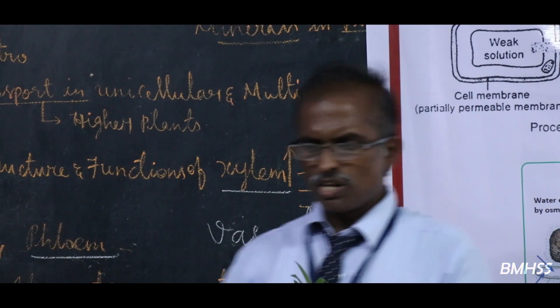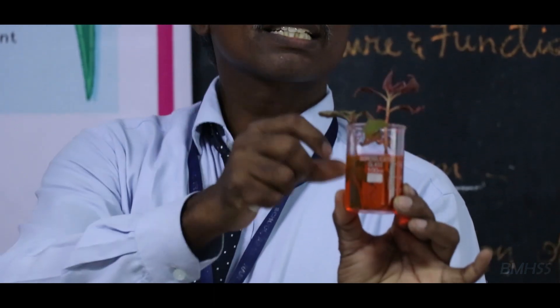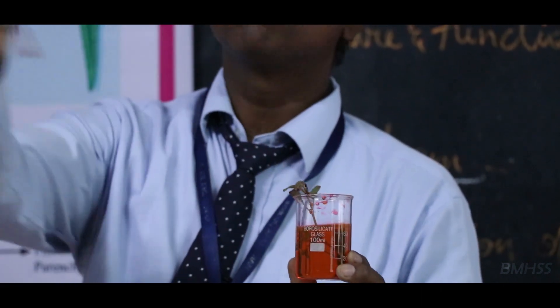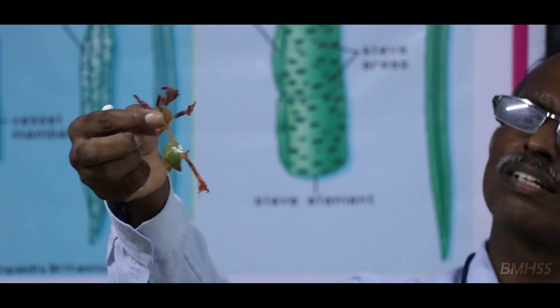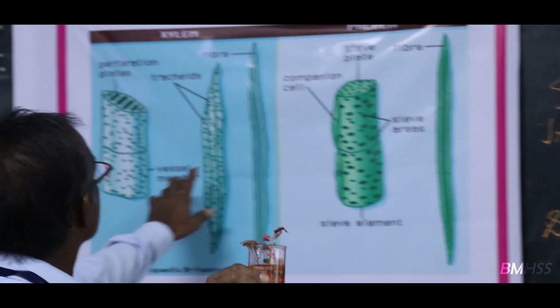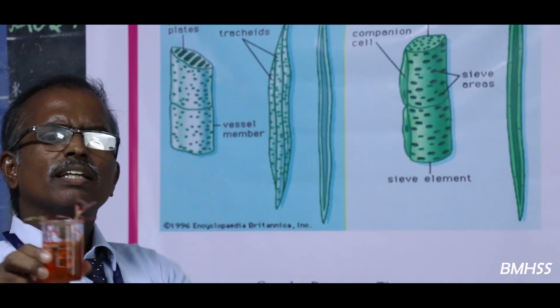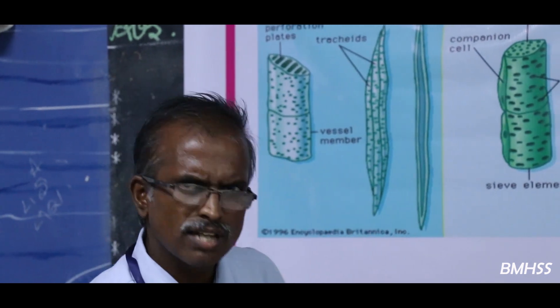Now about xylem vessels - we do one important experiment at home. Take a small beaker and put a small plant - a balsam plant. After washing the roots, put it into eosin or safranin dye. After some time observe the entire plant - the stem changes to red color due to absorption of water. This experiment clearly proves that xylem vessels are responsible for transportation of water. In other terms we call this the ascent of sap.